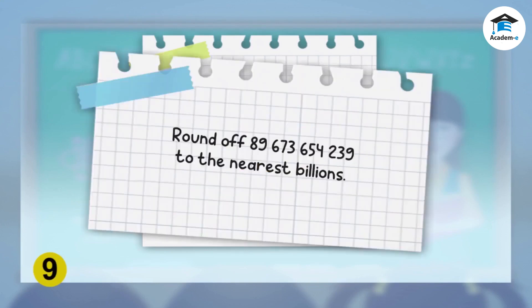Do this next example. Mark off the 9, the digit in the billions place, then look at the digit to its right. Since the 9 becomes a 10, this is actually 89 going up to 90.